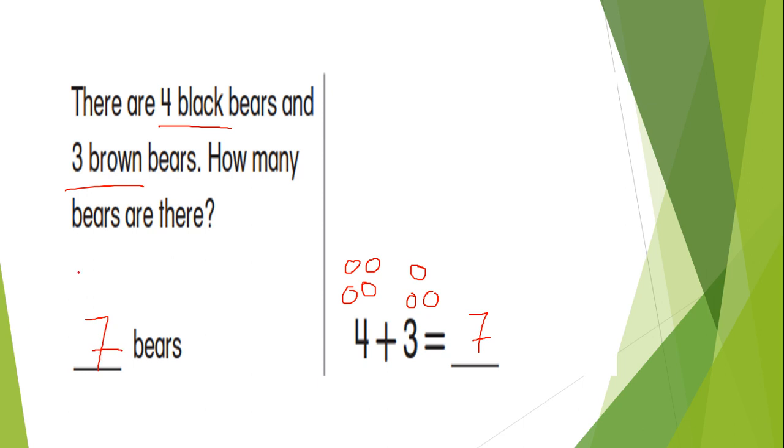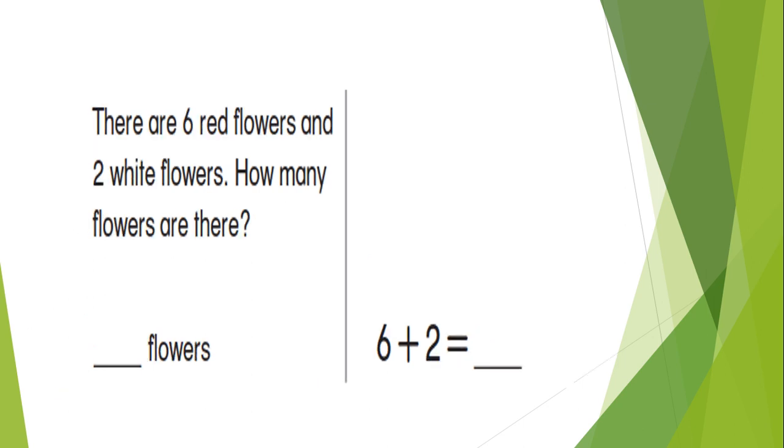Now let's see the last question we have today. It tells you that there are six red flowers—I love flowers—and two white flowers. So we have six red and two white. It asks you how many flowers are there. Like we did before, we will make two steps: first make the circles, second count. I guess it's easy, right?